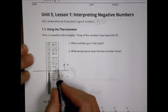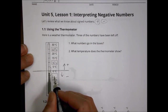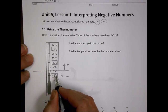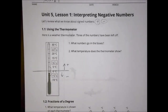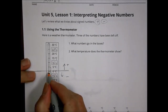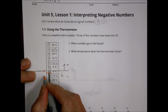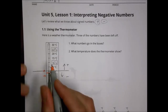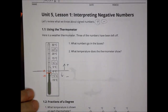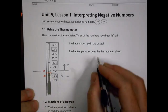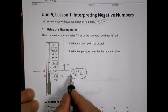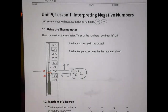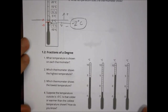Going down uses the same increment — five degrees each time. So below zero we get negative 5°C, followed by negative 10. The temperature shown on the thermometer is located between zero and negative five. The halfway point is about negative two and a half, so I'd estimate the temperature is about negative 2°C. That's an approximate value — you can estimate it yourself.